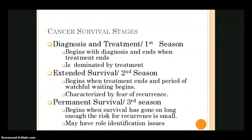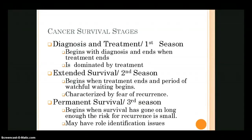Extended survival begins when treatment ends, and we fall into a period of watchful waiting, characterized by the fear that the cancer is going to recur. Permanent survival begins when the risk of recurrence is small enough that we feel the person is in permanent survival. At this point they may have role identification issues — up until now they were in the active phase of diagnosis and treatment, very much a cancer patient. Permanent survival is when they have to come to terms with what has happened.